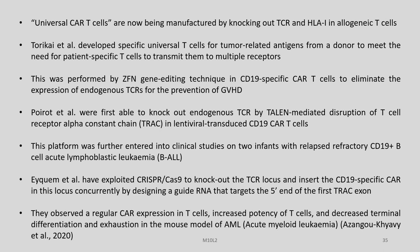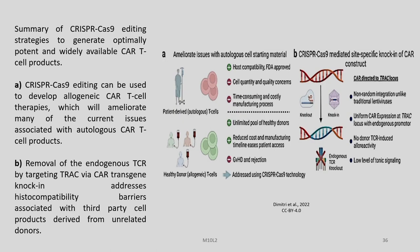Eyquem et al. exploited CRISPR-Cas9 to knock out the TCR locus and insert a CD19-specific CAR into this locus concurrently, by designing a guide RNA that targets the 5-prime end of the first TRAC exon. They observed regular CAR expression in T-cells, increased potency of T-cells, and decreased terminal differentiation and exhaustion in a mouse model of acute myeloid leukemia.